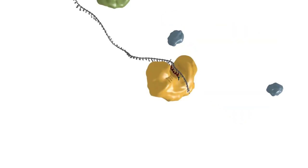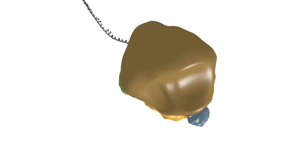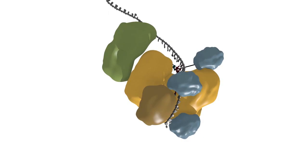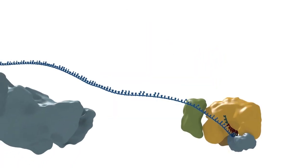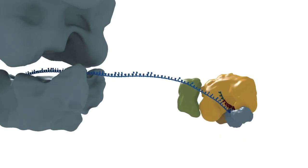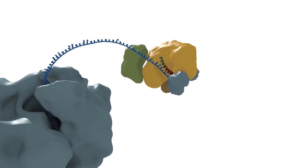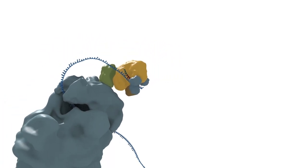Once bound to targets, miRISCs appear to recruit additional factors, including in particular a protein that contains multiple glycine tryptophan repeats, which is known as TNRC6 in humans. This protein is thought to be involved in repressing translation and in destabilizing the mRNA through mechanisms that remain poorly understood. What is clear is that the repression mechanism does not depend on the slicer activity of the argonaute protein.